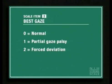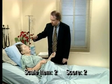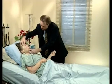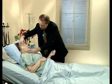Score a two when there is forced deviation or total gaze paresis not overcome by the oculocephalic maneuver. In this demonstration, the patient is asked to look all the way to the right and then back toward the examiner. If there is a conjugate lateral deviation that is not overcome with reflexive movements, the score should be a two.